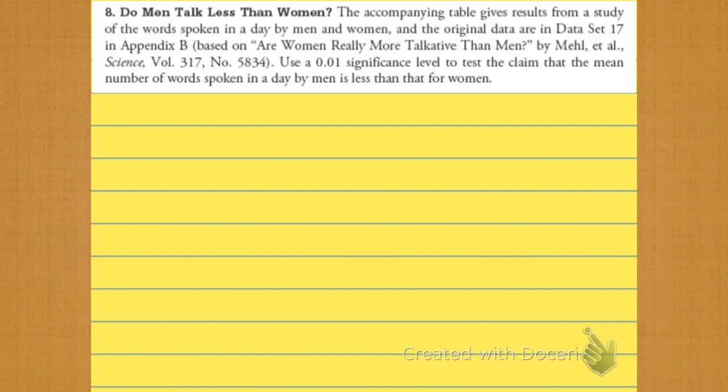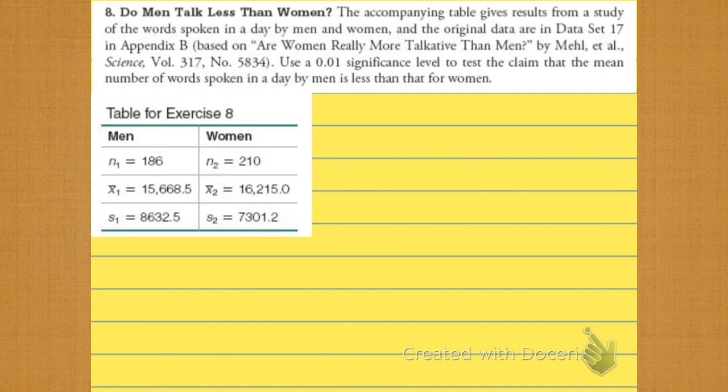There's that table. Then they tell you where the data set came from in the book. It came from use alpha being 0.01 significance level to test the claim that the mean number of words spoken in a day by men is less than for women.